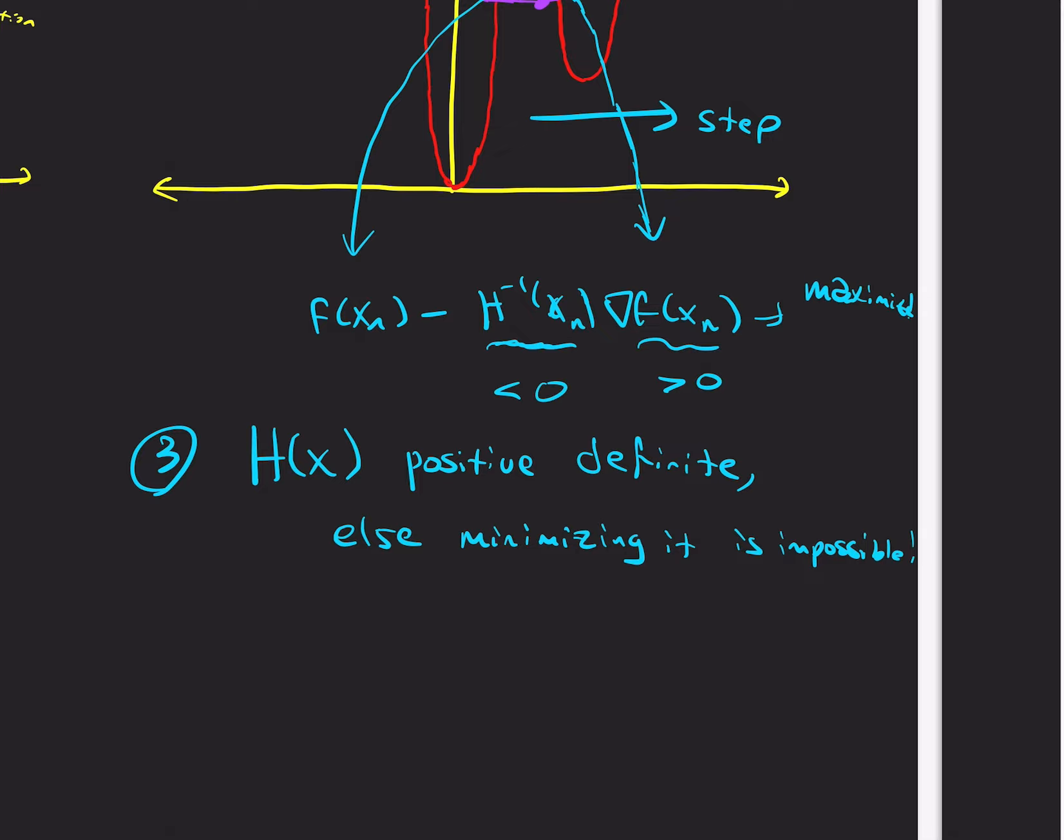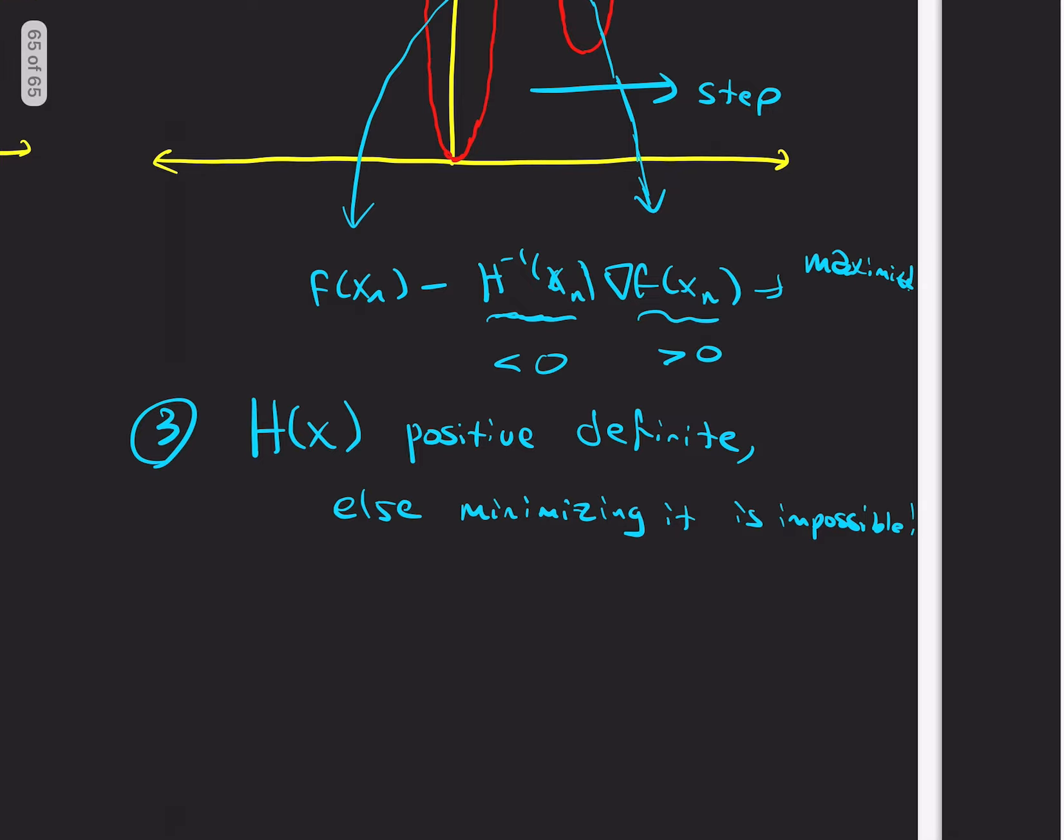Because remember, all we did was we set the derivative to zero, but that doesn't guarantee that it's a minimum. So in this case, when it's negative curvature, it's actually local maximum. And so what we really want is this. And h of x being positive definite is